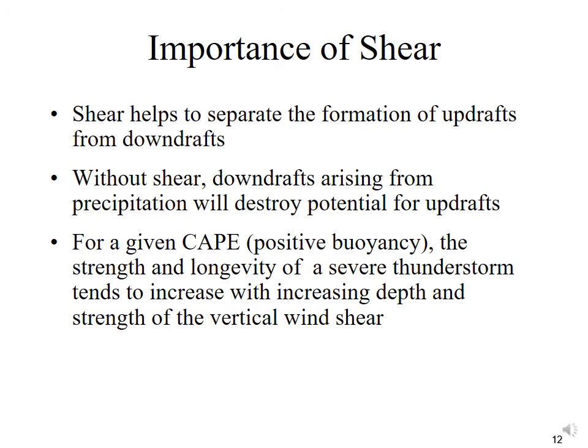Shear is extremely important in the formation of these multi-cell thunderstorms — it separates the updrafts and the downdrafts. Without that shear, the downdrafts would destroy the updrafts just like they do in the air mass thunderstorm. For a given amount of convective available potential energy, the strength and longevity of a severe thunderstorm tends to increase with increasing depth and strength of the vertical wind shear. So the more wind shear we have, the longer and more severe the thunderstorm will be.